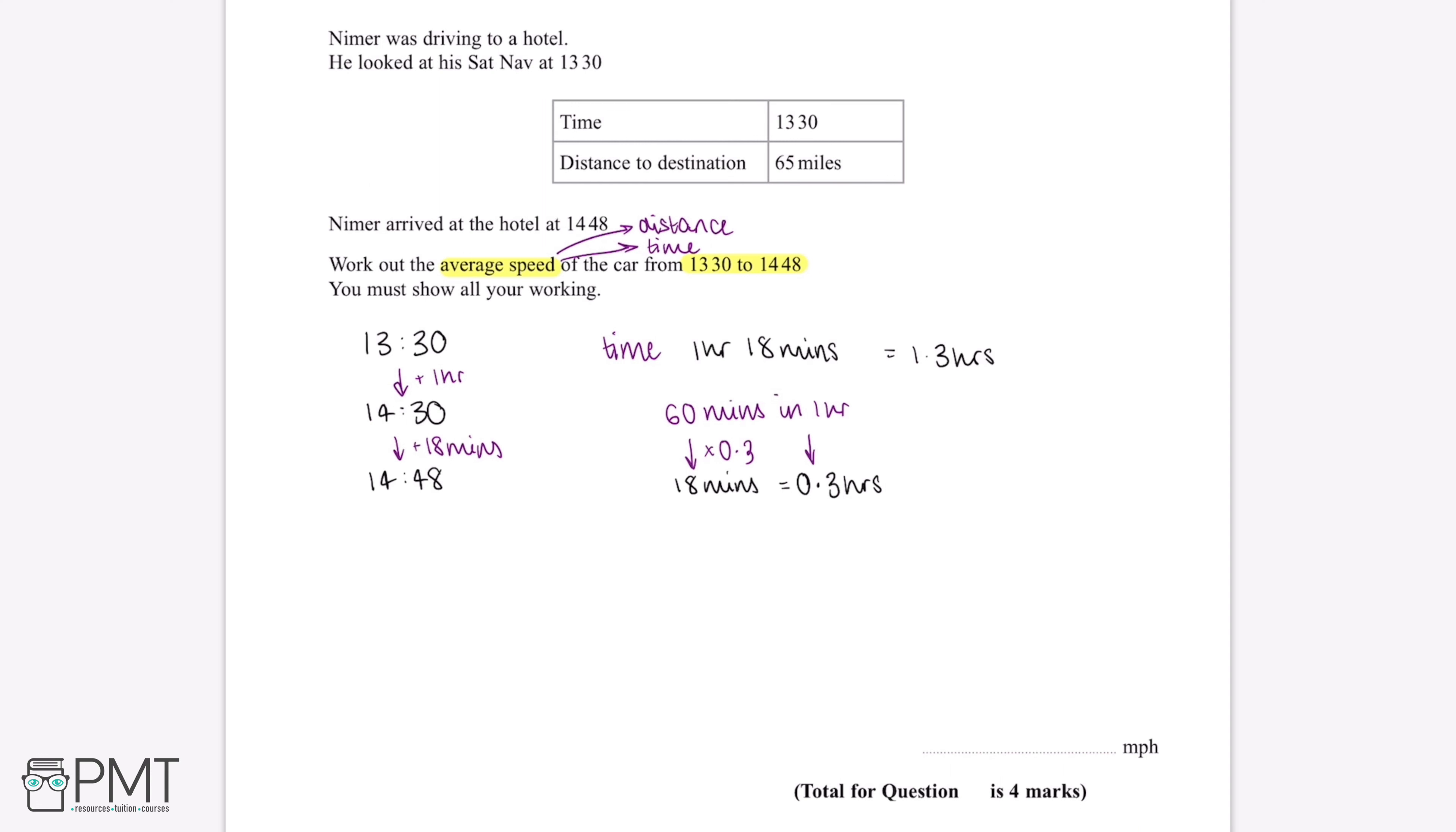In the question we've been given the distance travelled, which is 65 miles. The final thing we need to do is work out the average speed. The speed is equal to your distance travelled divided by the time taken to travel that distance.